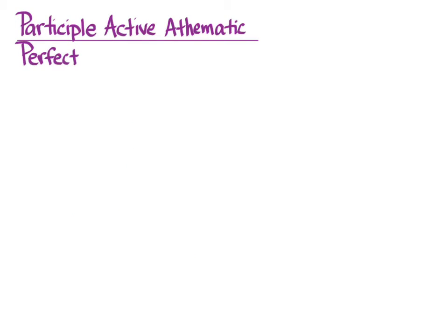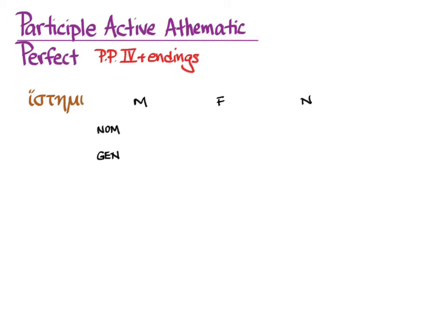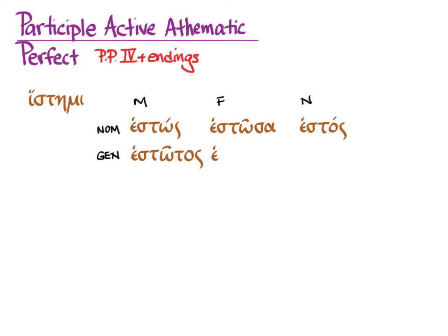Now we can go on to the perfect active athematic participles from histemi, which is going to mean principal part four plus the endings. Just as you did for the active participles for the present system and the aorist system for all three verbs, it's really best just to memorize these forms as if they're new vocabulary. So: hestos, hestosa, hestos, hestotos, hestoses, hestotos. That shows you exactly how to decline for the rest of the cases, numbers, and genders, using the stem from the genitive singular—hestot-, hestos-, hestot-—for all of the other cases, numbers, and genders.